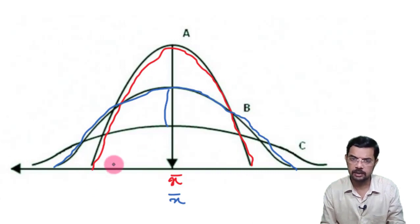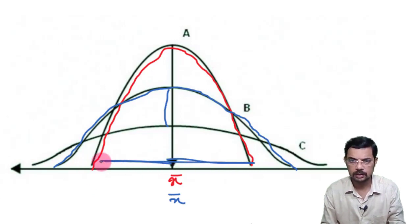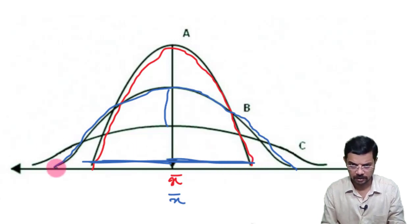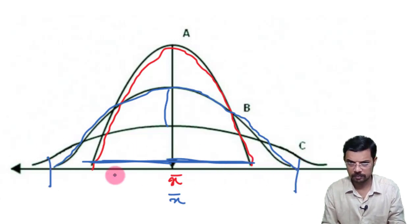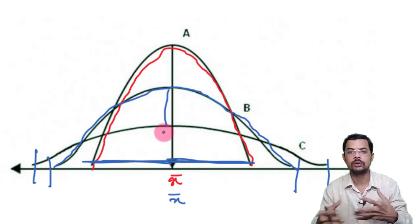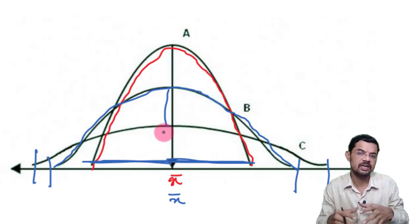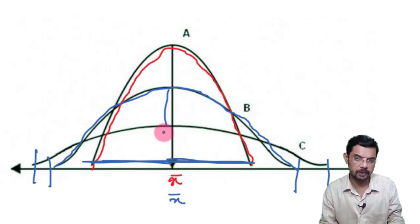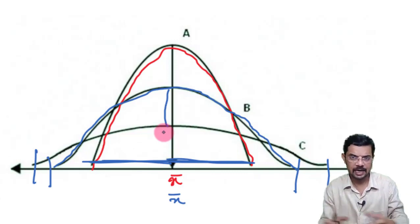We can observe that the three curves are differently spread. The first red curve is spread from one region to another, the second one has its own spread, and the third one spreads from yet another point to another. So three different distributions can have different spreads or be scattered in different manners.